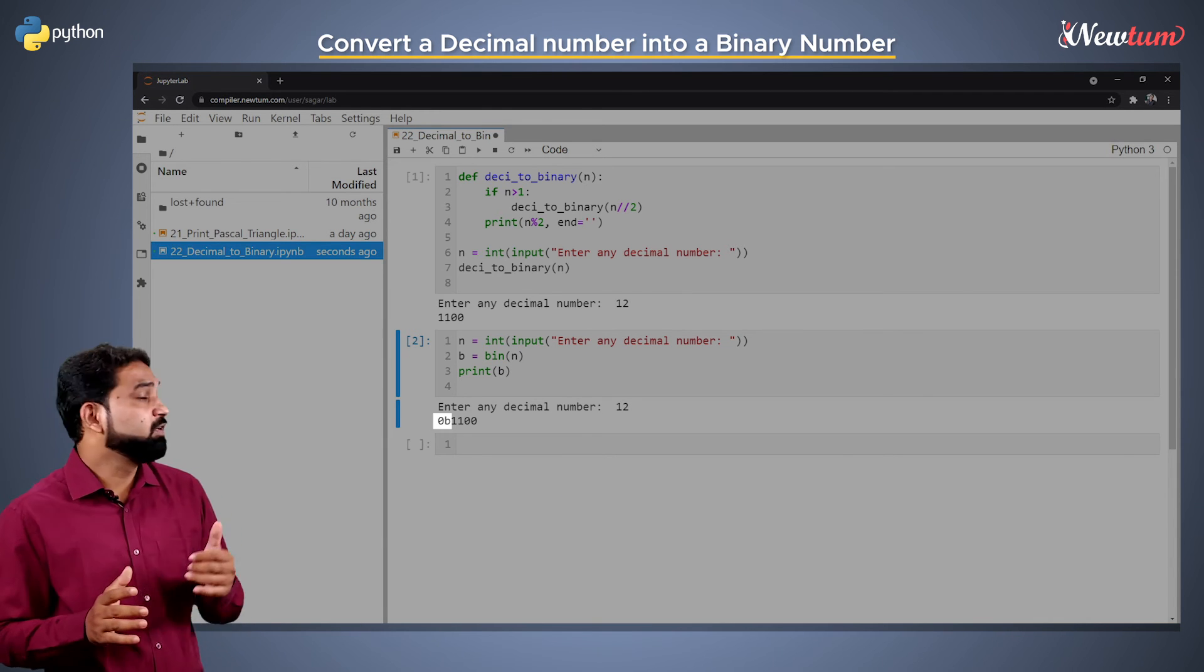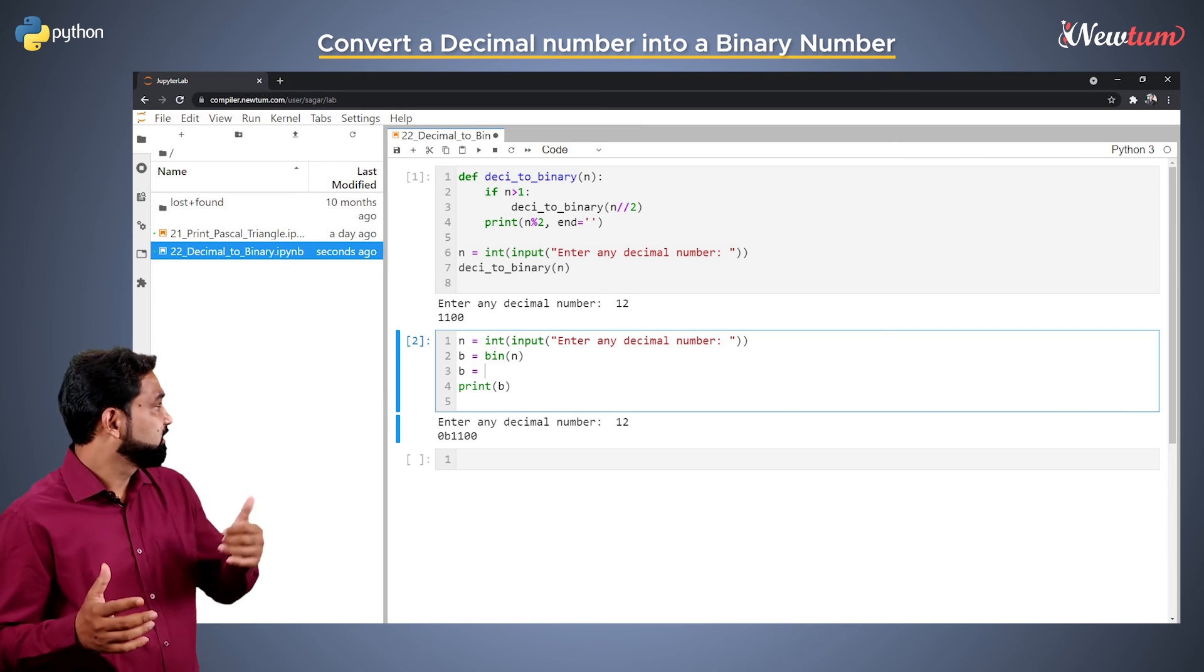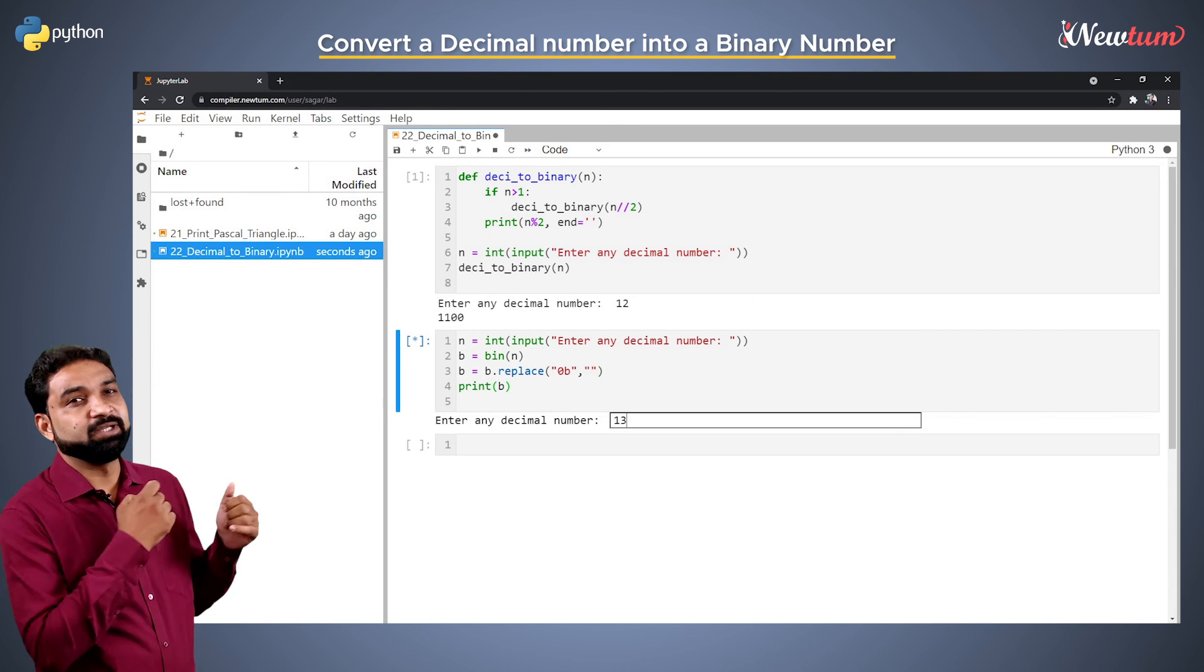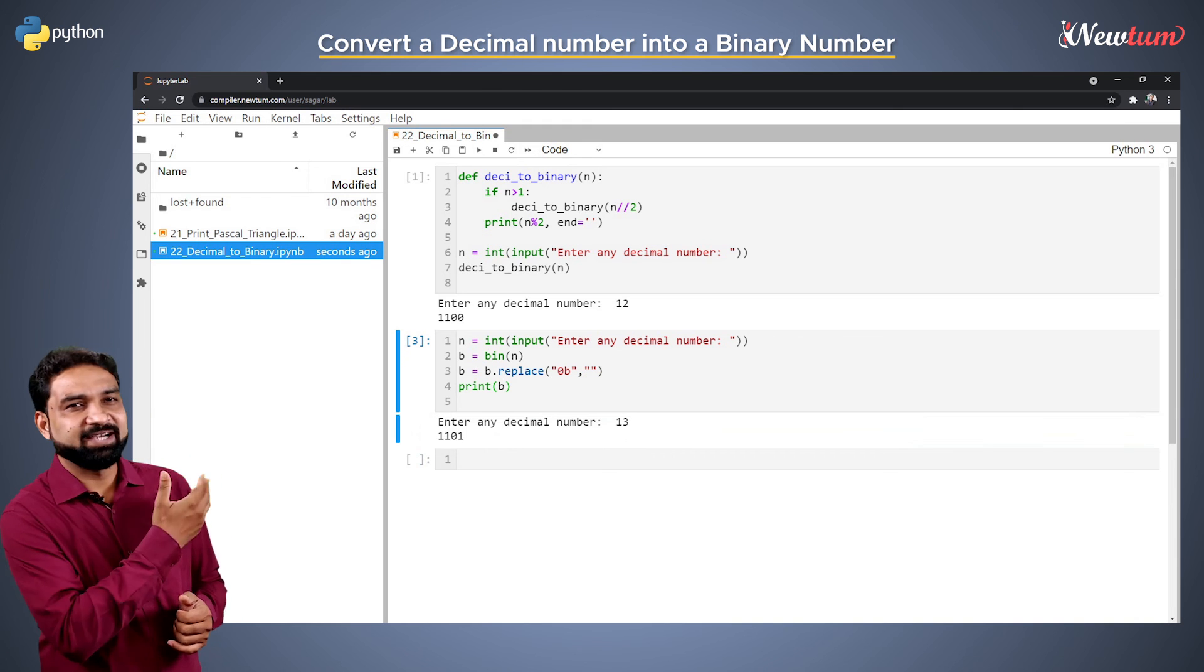To remove 0b, we will use the replace function like this. Run the code and enter the value 13. That is our right output.